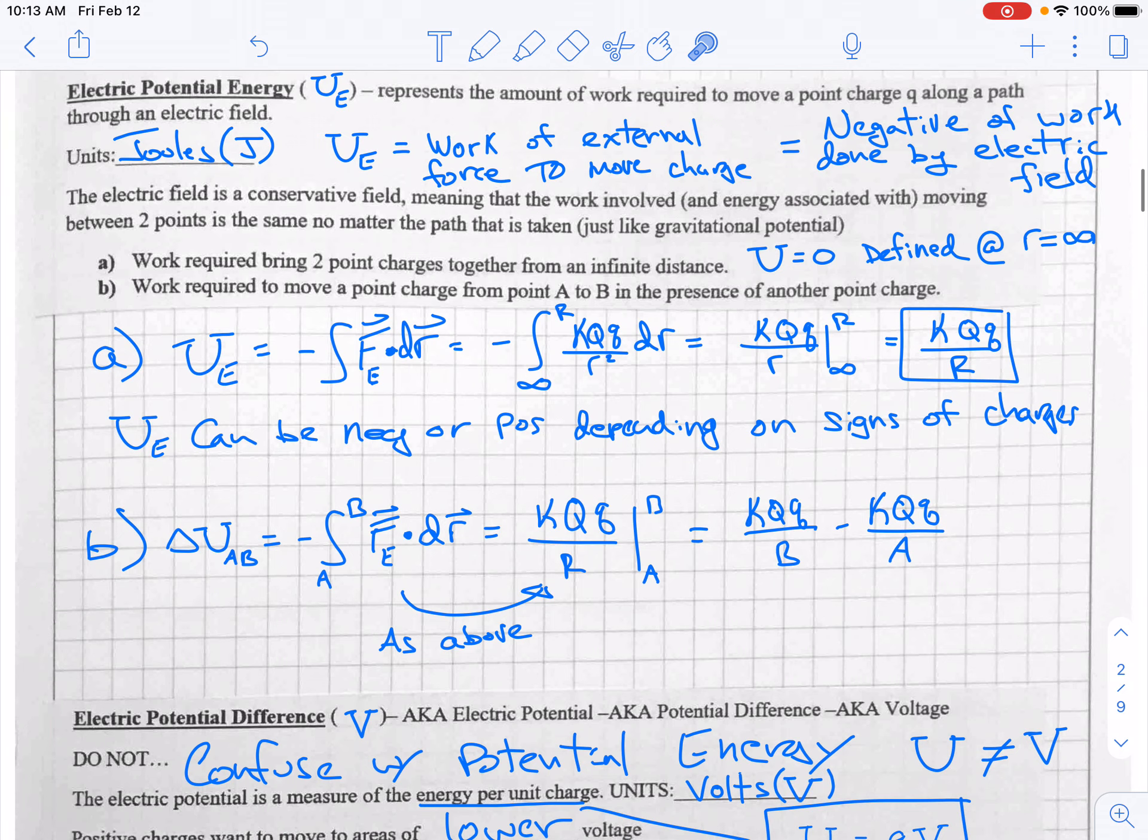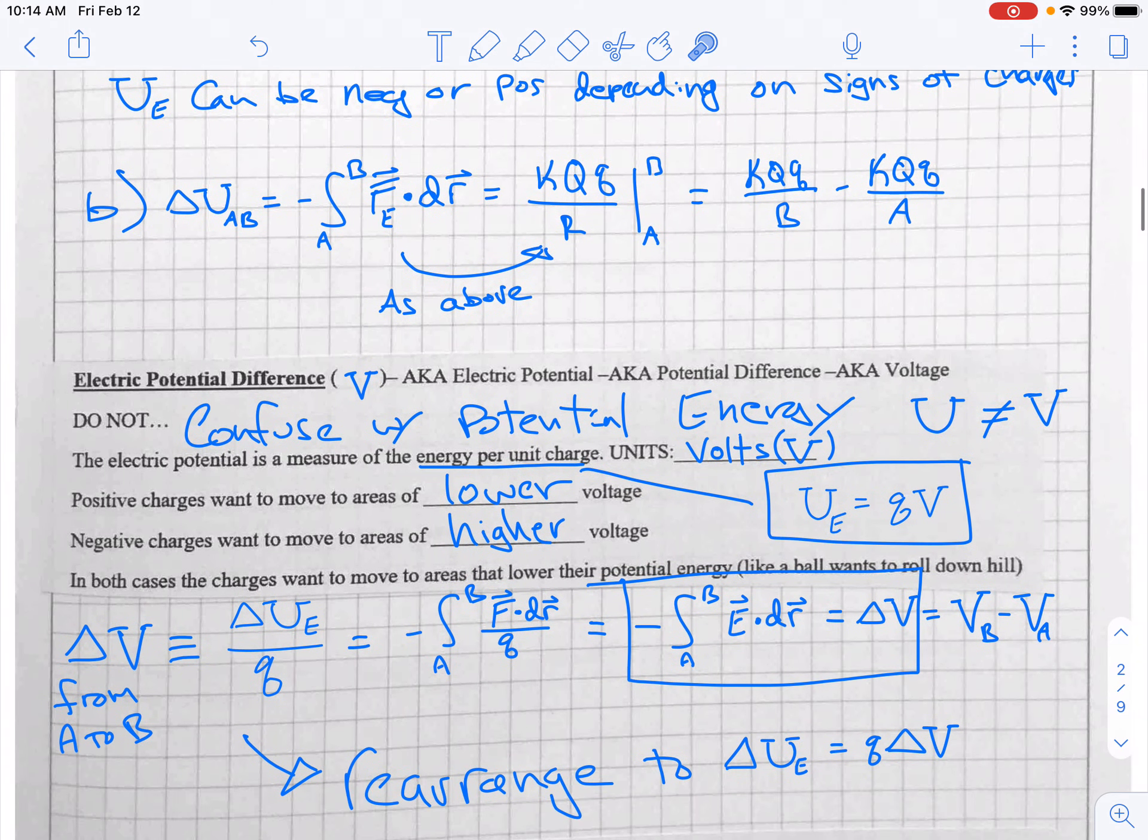For the electric potential difference, or just electric potential or potential difference, voltage is what we mean by that. Sorry, there's so many confusing terms. Voltage is, I think, the easiest way of saying it, but you will see those other ones. Don't confuse this with potential energy.